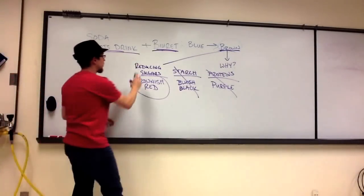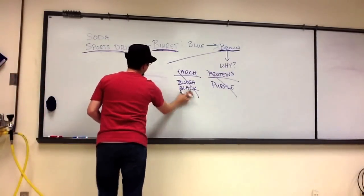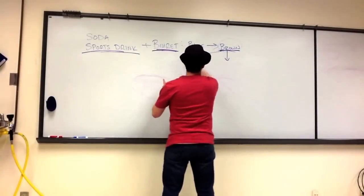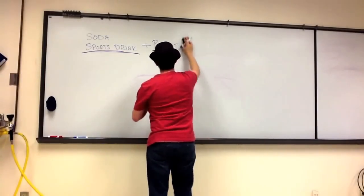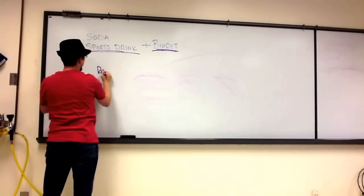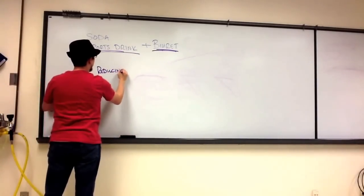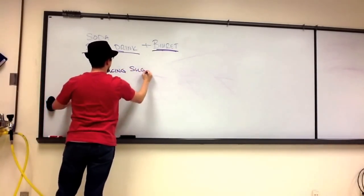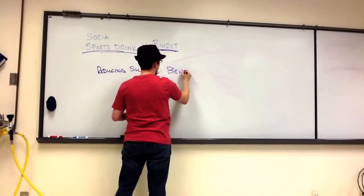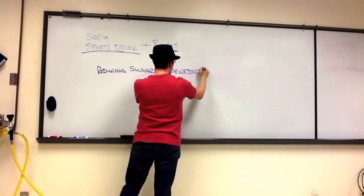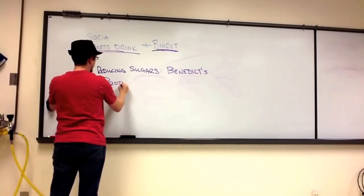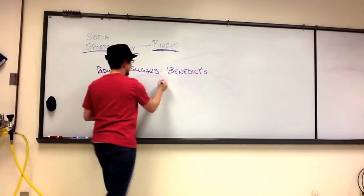Let's start with the Biuret. The question I want to introduce and talk about first is, when we're thinking about the reducing sugars test, remember that the detection agent we use for reducing sugars is Benedict's, while for proteins, we of course use Biuret.